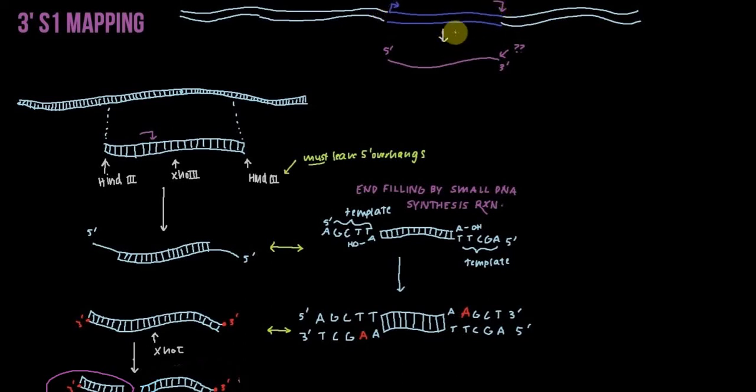And that gene, when transcribed through transcription, produces this mRNA. And so what we want to do in 3' S1 mapping, and this is just one example, is actually figure out where the transcription stop site is. So where does this mRNA end?